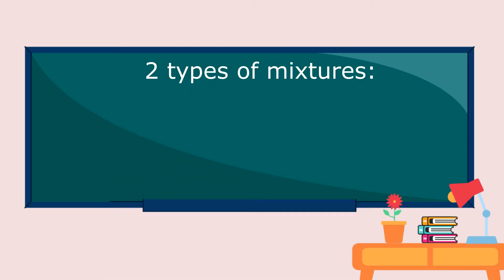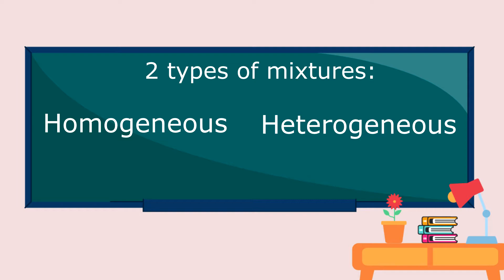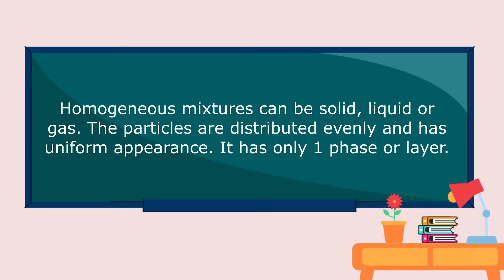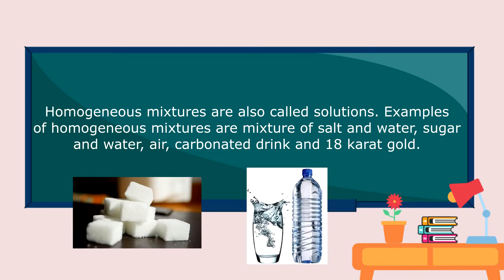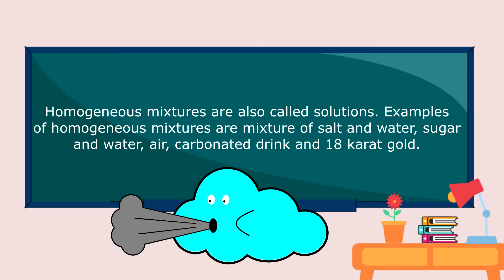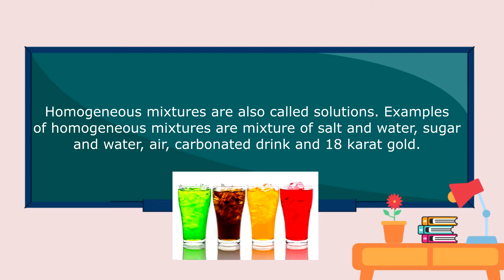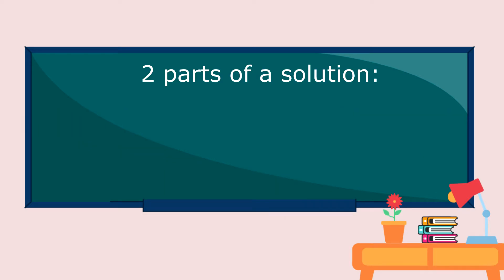There are types of mixtures based on observable phase: homogeneous mixtures and heterogeneous mixtures. Homogeneous mixtures can be solid, liquid, or gas. The particles are distributed evenly and have a uniform appearance — it has only one phase or layer. Homogeneous mixtures are also called solutions. Examples of homogeneous mixtures are a mixture of salt and water, sugar and water, air, carbonated drinks, and 18-carat gold.